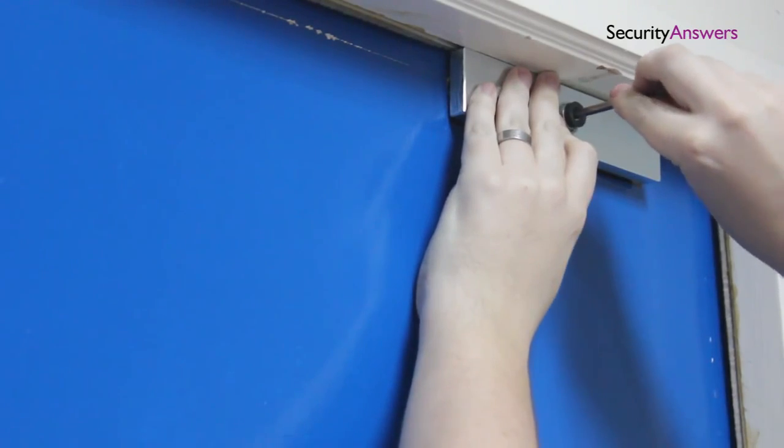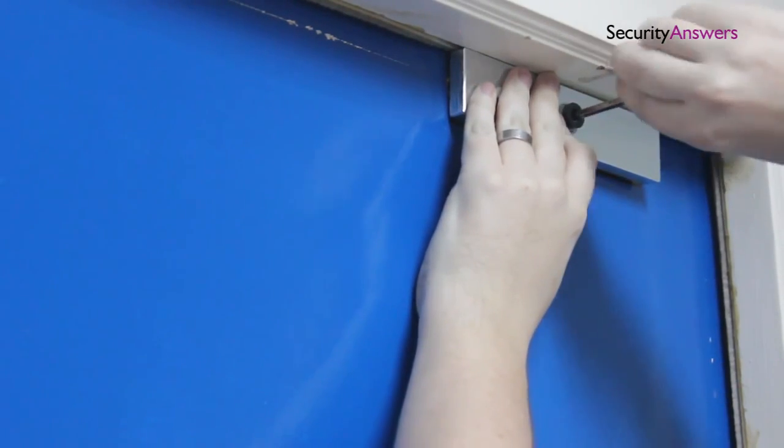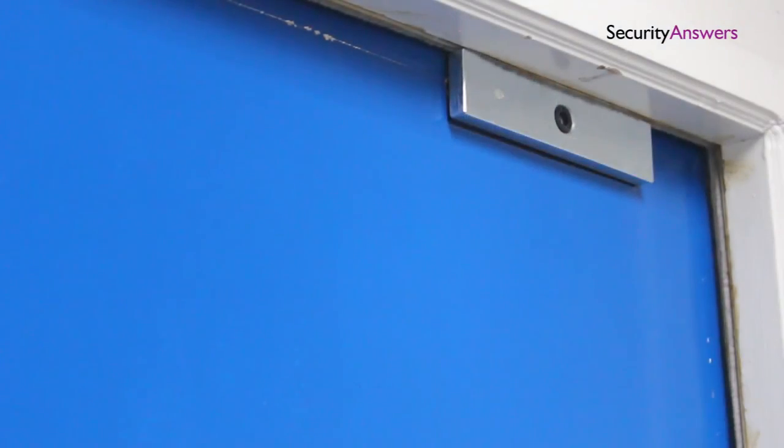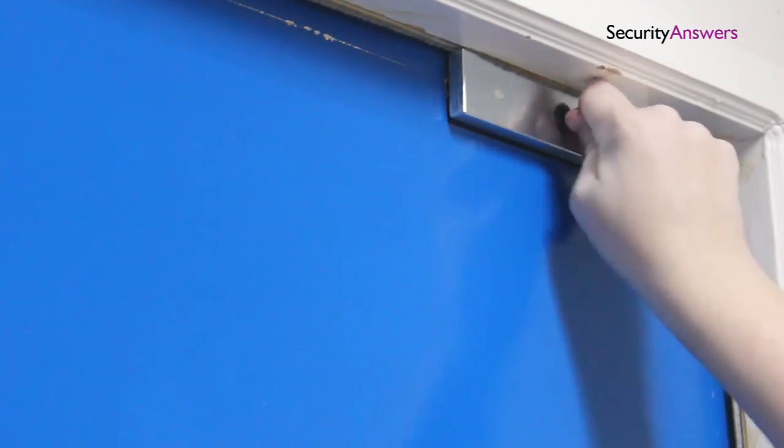Before you do your final tightening of your screws, close the door to double check the fitting of your lock. If everything is okay, go ahead and tighten your screws.